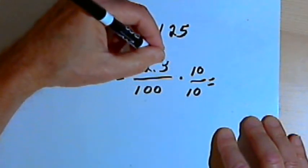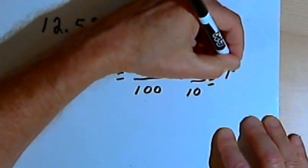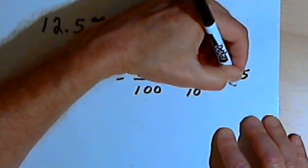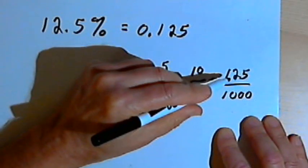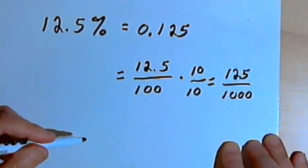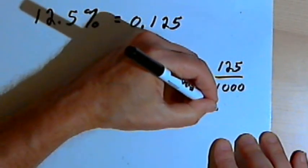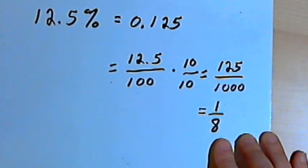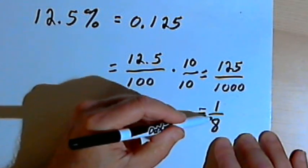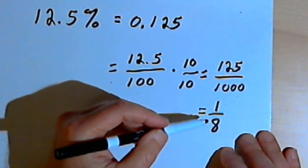That would shift the decimal over and basically get rid of it. So 10 times 12.5 is 125, and 10 times 100 is 1,000. So now I've got 125 over 1,000. And if it's possible to reduce it, we probably should. I could turn it into 1 over 8. So the fraction representation of 12.5% is going to be 1 over 8.